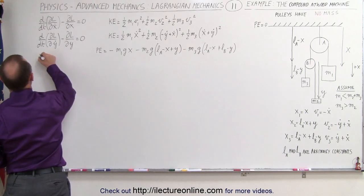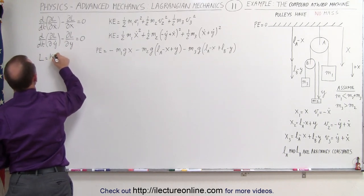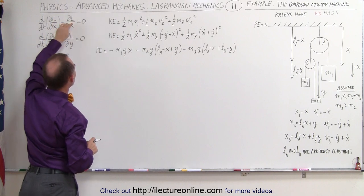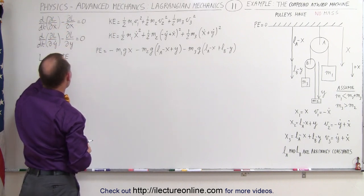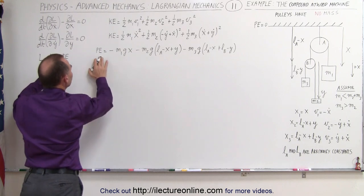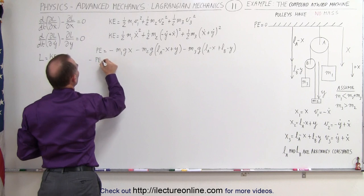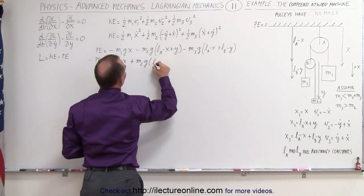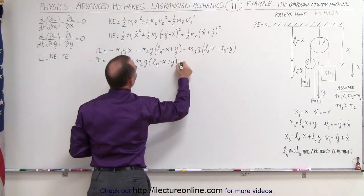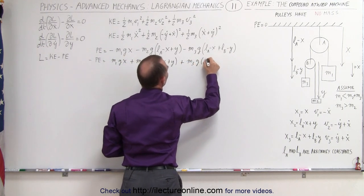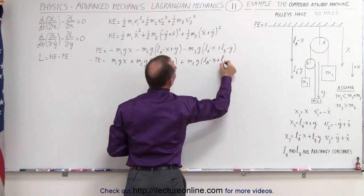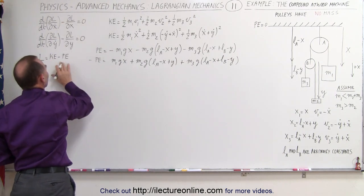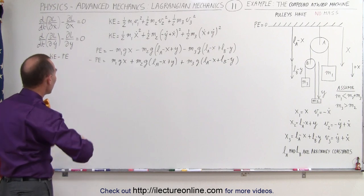The Lagrangian is L = T minus U. When taking partial derivatives of L, we use the negative potential energy. The negative potential energy equals: M1·g·x + M2·g·(L_A minus x plus y) + M3·g·(L_A minus x plus L_B minus y). Notice that L_A and L_B are arbitrary constants, so their partial derivatives go to zero.